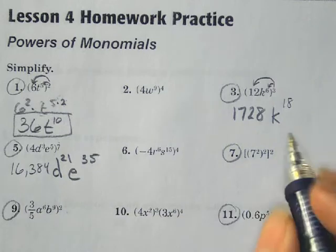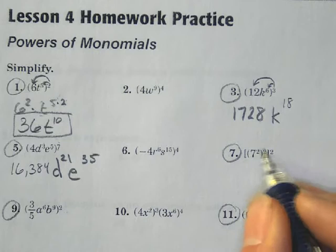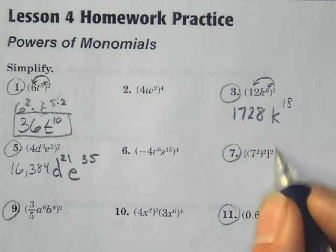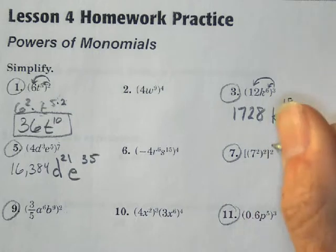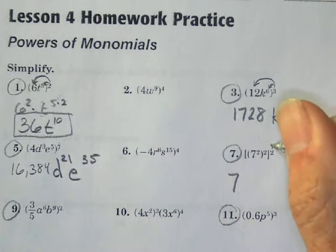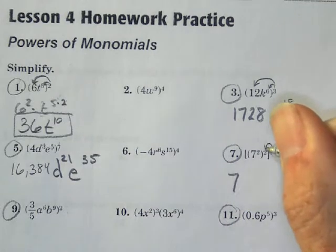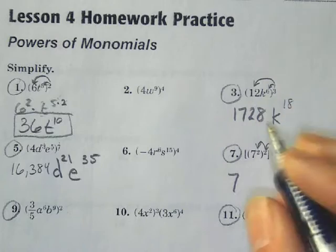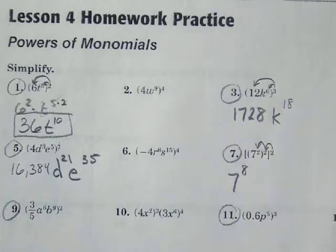Moving on to number 7, though. What we're going to do is we're going to have 7 squared, and that squared, and then that squared. So if we kind of go backwards here, what we really have is 7 to the, let's see, 2 times 2 is 4, and then 4 times 2 is 8. And we can leave that there for now.